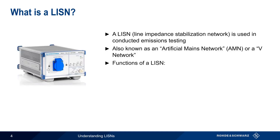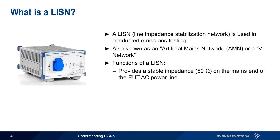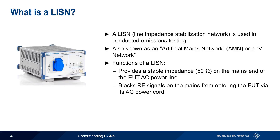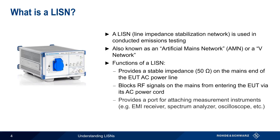A LISN has three main functions. First, it provides a stable impedance, usually 50 ohms, on the mains end of the EUT's power cord. Another important function is that it prevents RF signals on the AC power or mains network from entering the EUT via its power cord. And lastly, a LISN provides a port for attaching measurement instruments, such as an EMI receiver, spectrum analyzer, or oscilloscope. In the remainder of this presentation, we'll explain these different functions and how they're used in EMC conducted emissions measurements.